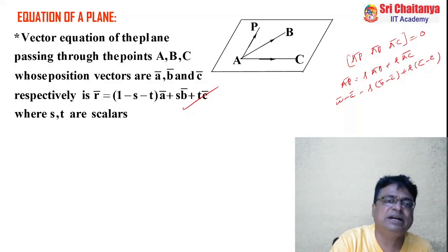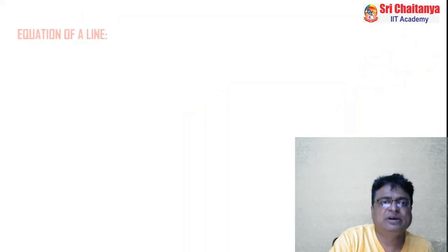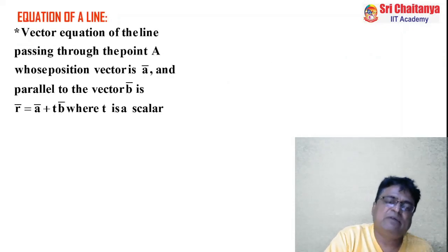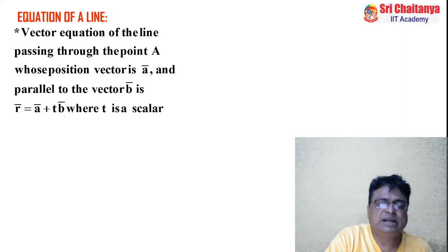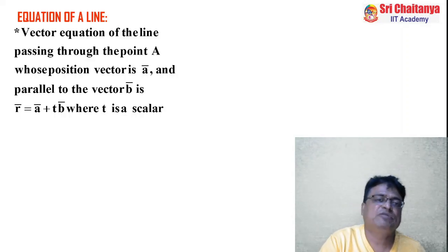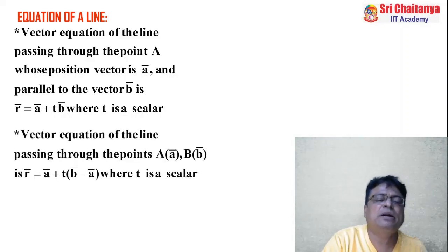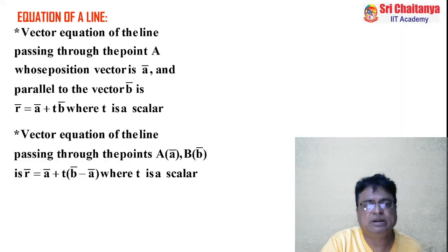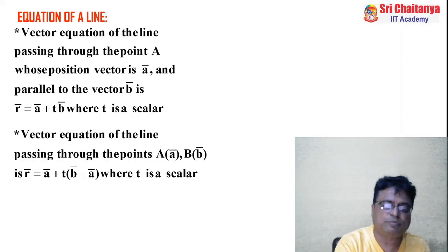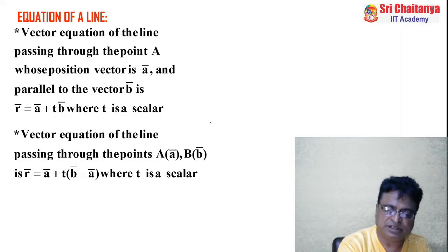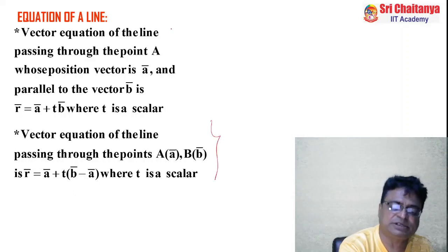Vector equation of the line — already derived in a previous video. The vector equation of the line passing through point A with position vector ā and parallel to vector b̄ is r̄ = ā + tb̄. Similarly, the vector equation of the line passing through two points A (position vector ā) and B (position vector b̄) is r̄ = ā + t(b̄ - ā).